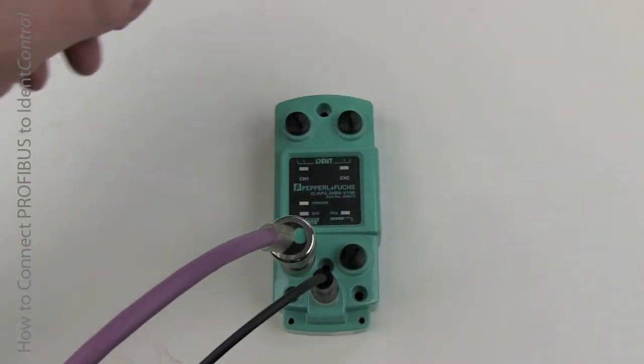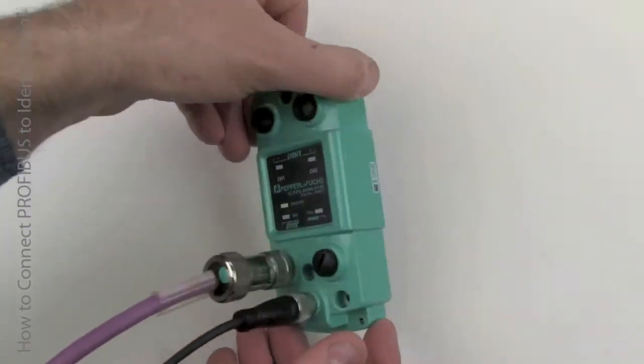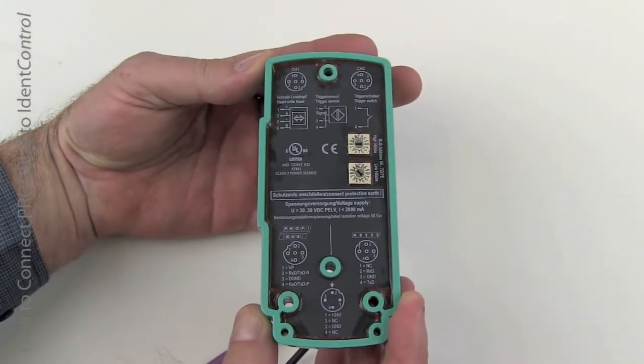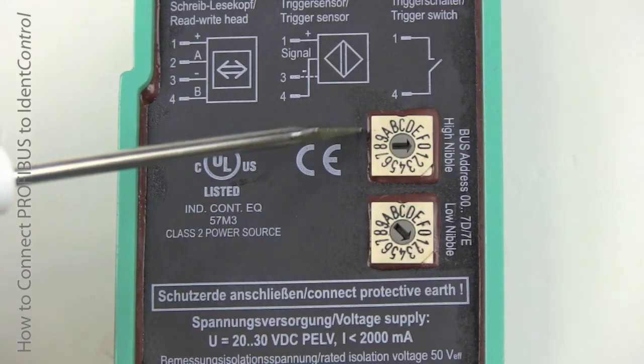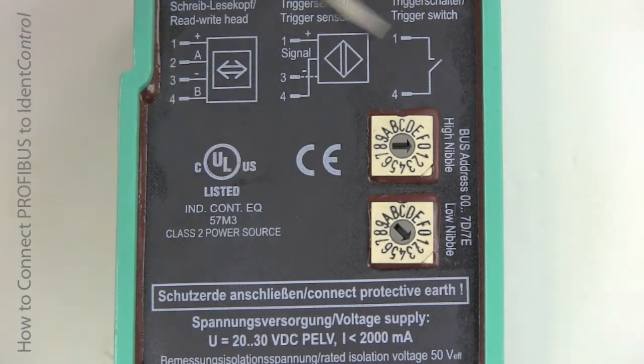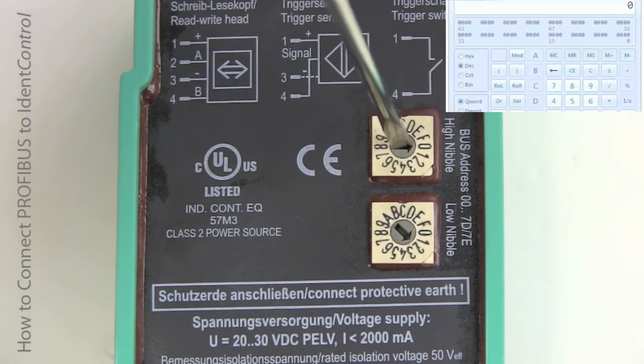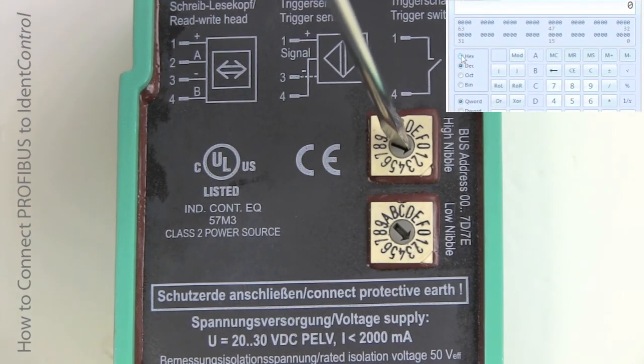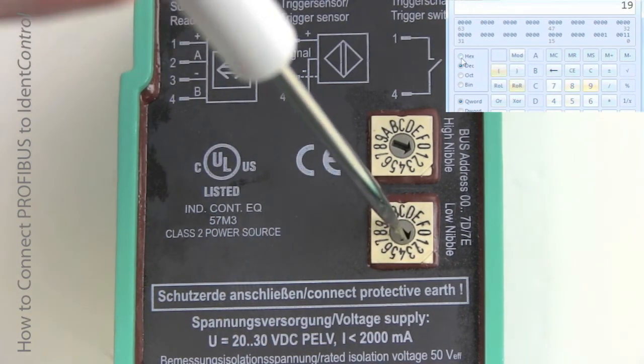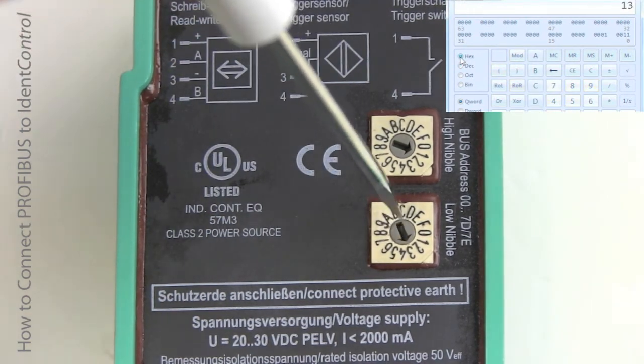On the Ident Control Compact, you'll see there's no display, but if you flip it over, you'll find the two rotary switches that we're going to use to set the address. First thing you have to do is take your address in decimal, convert it to hex, and then you can enter it here as a two-digit number. High byte on the top, low byte on the bottom. In this case, address 19 will be converted to 13 hex.